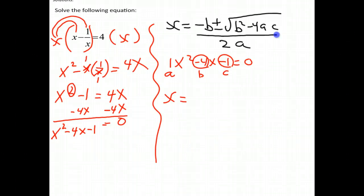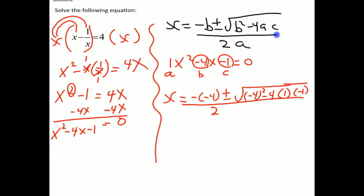So we get x equals negative b, which is negative, negative 4, plus or minus the square root of negative 4, which is b, squared, minus 4 times a, which is 1, times c, which is negative 1, all divided by 2a, which is 2 times 1.